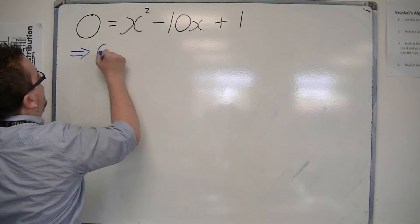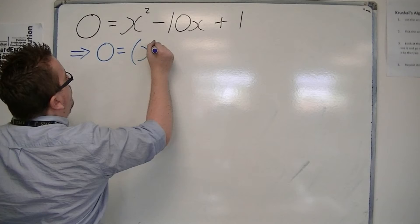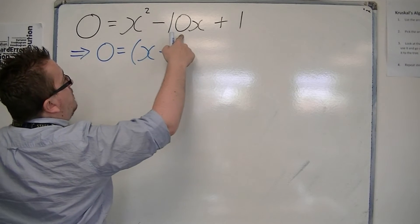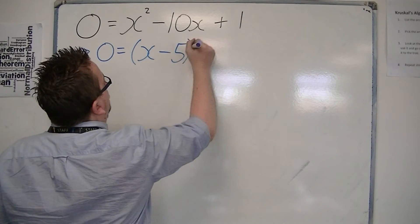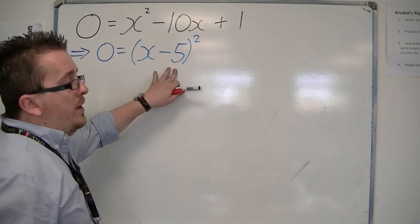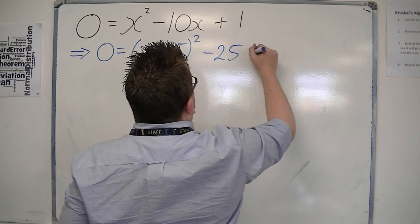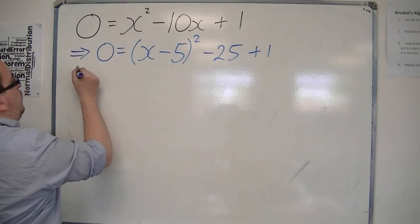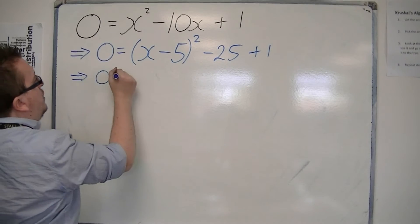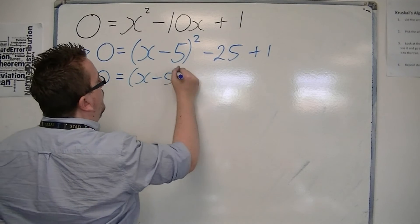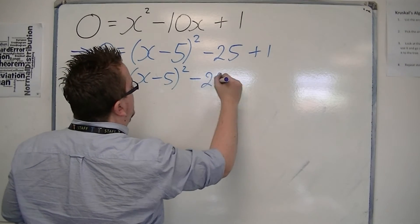So, completing the square, open a bracket, and we want half of the minus 10, so that's minus 5, squared. Take away the square of the minus 5, it's minus 25, and then we've got that plus 1 on the end. So, what we have here is 0 is equal to x minus 5, all squared, minus 24.